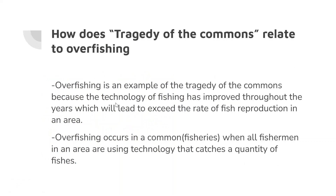How does the tragedy of commons relate to overfishing? Overfishing is an example of the tragedy of commons because the technology of fishing has improved throughout the years, which leads to exceeding the rate of fish reproduction in an area. Overfishing occurs in a common — in our case, fisheries — when all fishermen in an area use technology that catches a large quantity of fish.